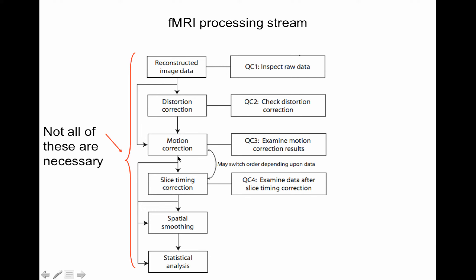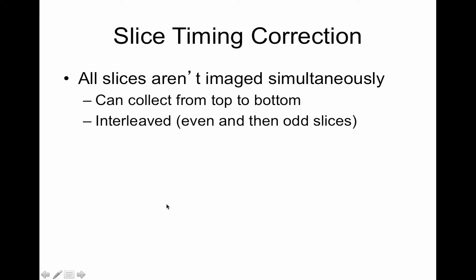Motion correction we must do, but slice timing correction I often just skip. Why do we do slice timing correction when we do it? Well, the slices aren't imaged simultaneously — during our two-second TR the data are actually acquired slice by slice. You can collect the data from top to bottom, but most frequently the slices are interleaved: the even slices are collected and then the odd slices are collected.